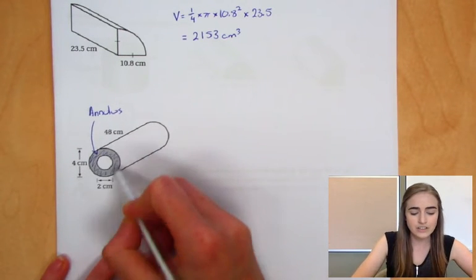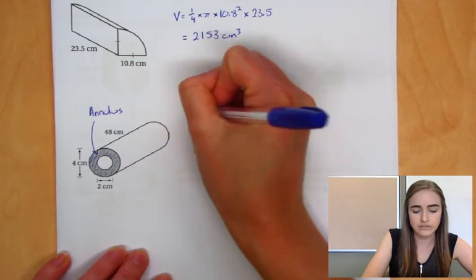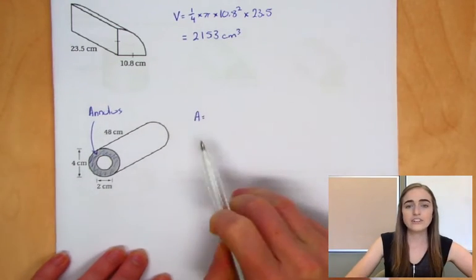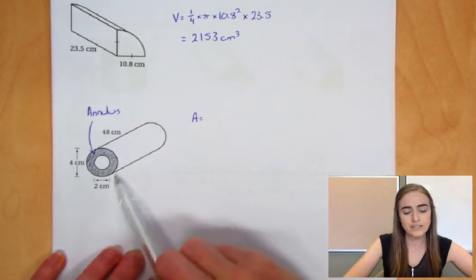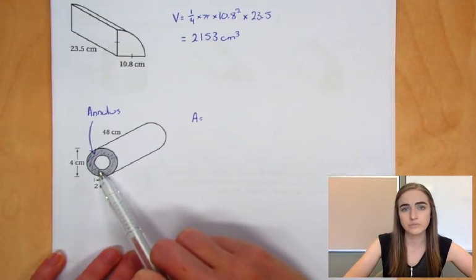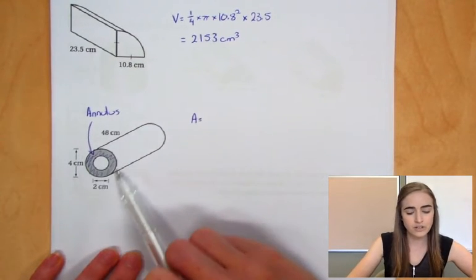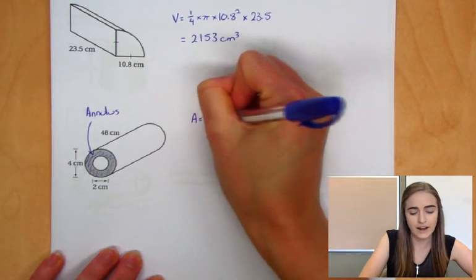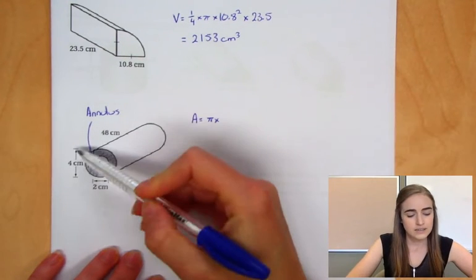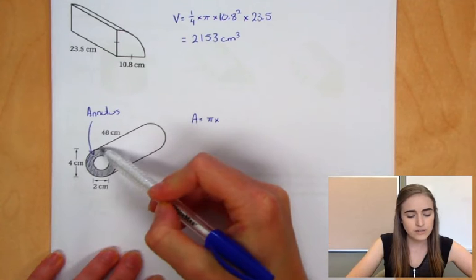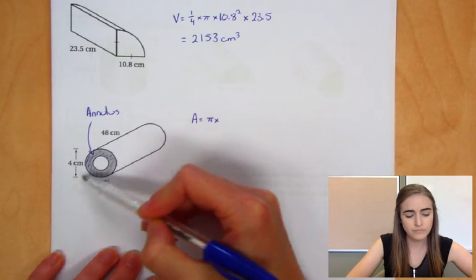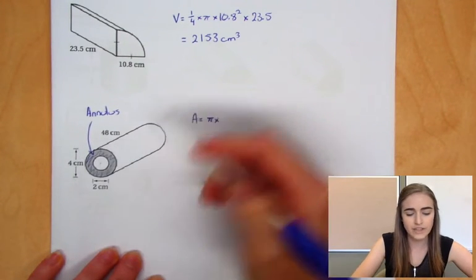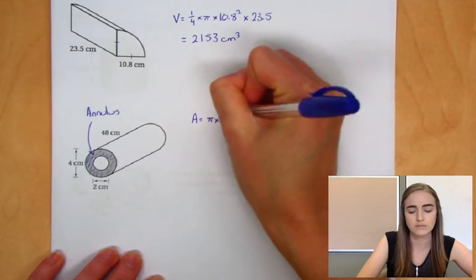So to find the area of that face, let's do that separately first this time. The area of that face is going to be the area of the big circle minus the area of the small circle. So the area of that big circle would be pi times the radius squared. If that big circle is 4 centimeters right from the top down to the bottom, then the radius would be half of that, would be 2. So pi times 2 squared.